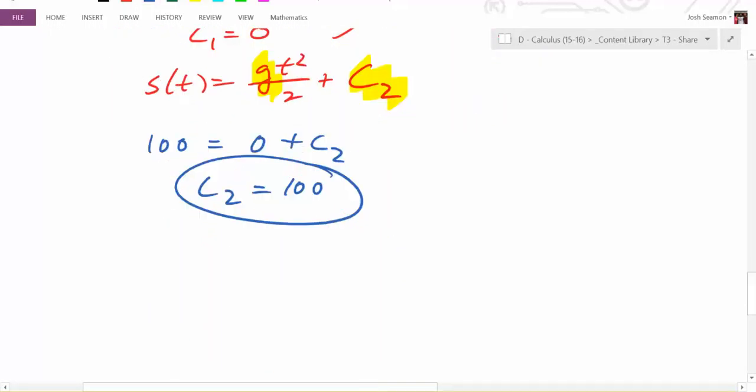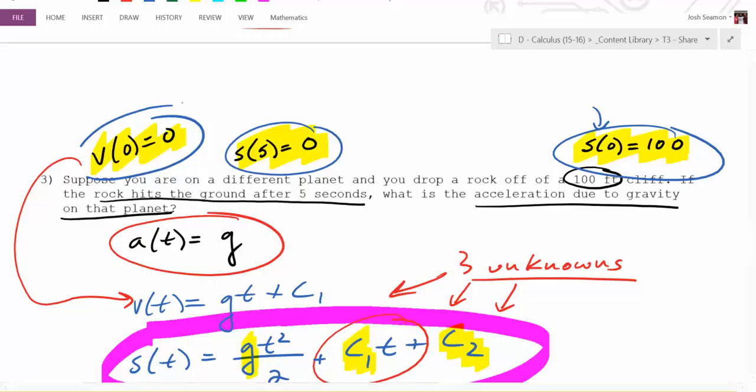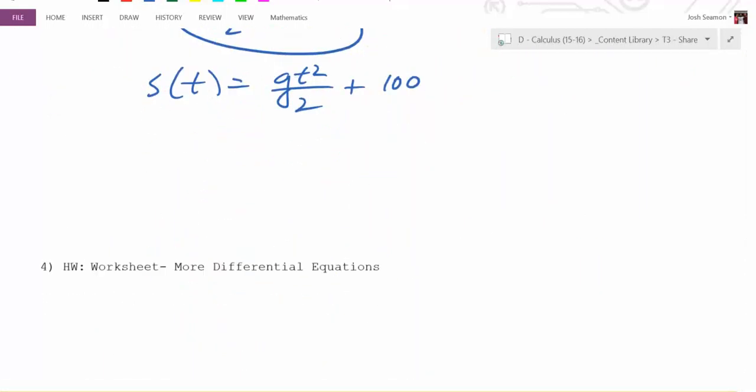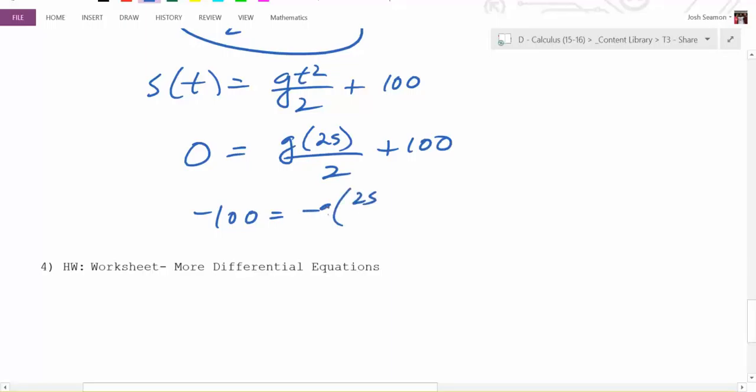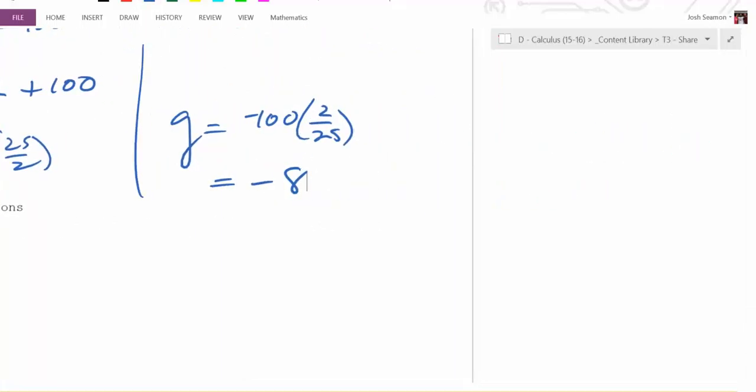You then plug it back in and what do you get? You get S of T is equal to GT squared over 2 plus 100, right? But what's that one last piece of information? So S of 5 is 0. So 0 is equal to G times 25 all over 2 plus 100. So you end up with negative 100 is equal to G times 25 over 2. So you end up with G is equal to negative 100 times 2 over 25. So that's negative 8. And since it's acceleration and we're talking about time in seconds and distance in feet, it's going to be negative 8 feet per second squared. Make sure you put the units in because that will be at least worth a point.